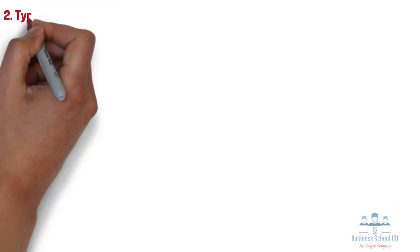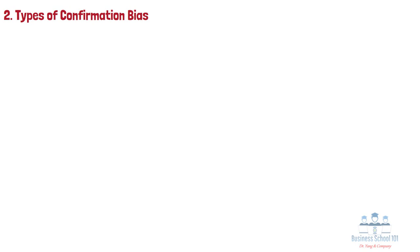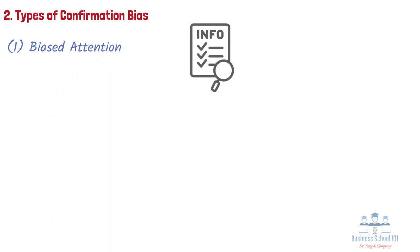Section 2: Types of Confirmation Bias. Generally, there are three major types of confirmation bias. First, biased attention. This confirmation bias occurs when consumers selectively focus and search for information that only confirms their attitudes while ignoring data that doesn't.